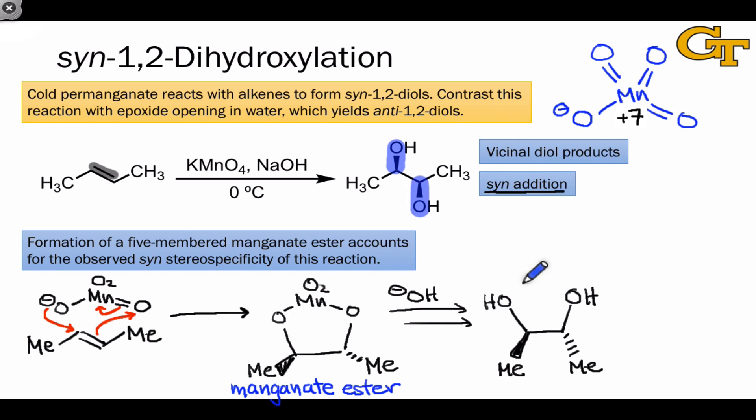One last point to make about this reaction is that these vicinal, or 1,2-diols, are the same products we get from ring opening of an epoxide. However, ring opening of an epoxide occurs with anti-stereospecificity. This means that if we epoxidize an alkene, for example using MCPBA, and then try to open it using something like hydroxide,